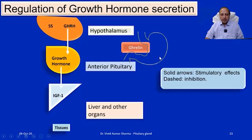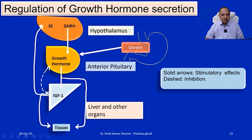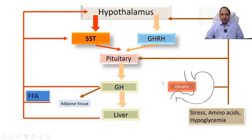In the regulatory diagram, solid arrows represent stimulatory effects and dashed arrows represent inhibitory effects. Negative feedback inhibition occurs at both the level of the anterior pituitary and the hypothalamus by the growth hormone produced. Ghrelin, growth hormone stimulatory hormone, and somatostatin all play a part in the finely regulated synthesis of growth hormone.